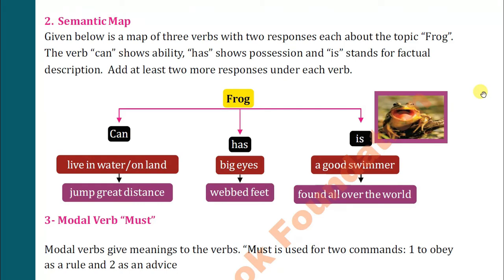For example: 'Frog can live in water,' 'Frog can live on land,' 'Frog can jump a great distance,' 'Frog has big eyes,' 'Frog has webbed feet,' 'Frog is a good swimmer,' 'Frog is found all over the world.' This is a practice of making sentences — you can make your own sentences in the same manner. Make at least two sentences for each verb. It is a small exercise to show you how to make sentences.